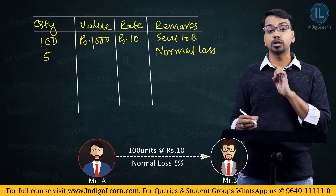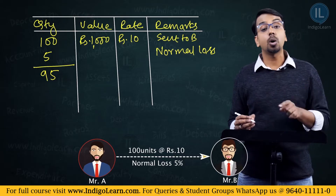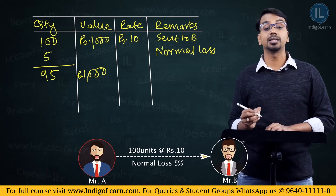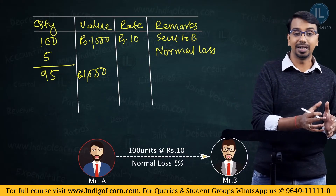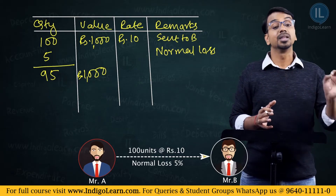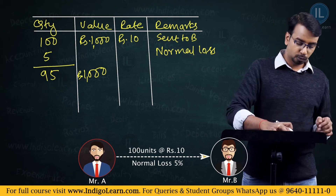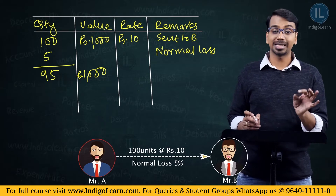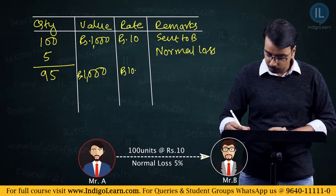Out of 100, 5 was lost normally, which means 95 is what is normally expected to be received. The cost of these 95 units will be considered as rupees 1000. So you are actually including the normal loss as a part of your inventory. The value of the 95 units is rupees 1000. Cost per unit = 1000 ÷ 95 = rupees 10.526. Mr. A would decide the selling price considering rupees 10.526 as the cost per unit.